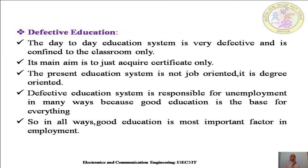The first reason for unemployment is defective education. The day-to-day education system is very defective and confined within classrooms only. Its main aim is just to acquire a certificate — the present education system is degree-oriented, not job-oriented. This defective education system is responsible for unemployment in many ways, because good education is the base for everything. Without good and true education, a person cannot obtain real knowledge, and hence good education is the most important factor in employment.